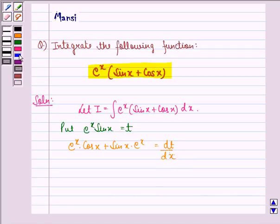And this implies that dx(e^x cos x + sin x · e^x) = dt.